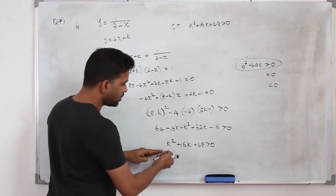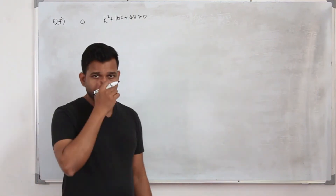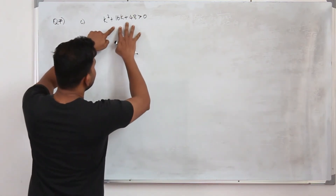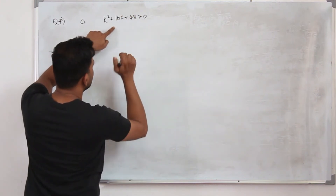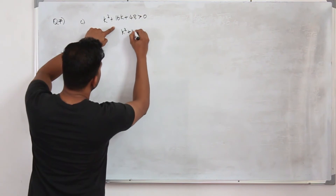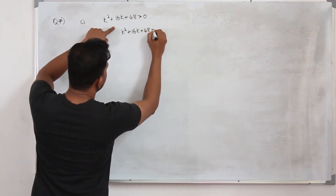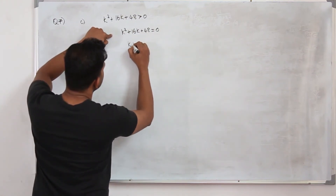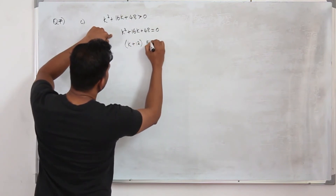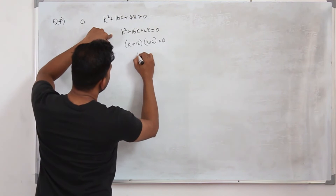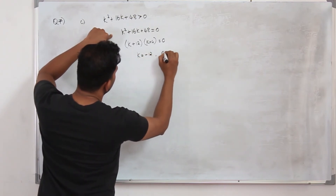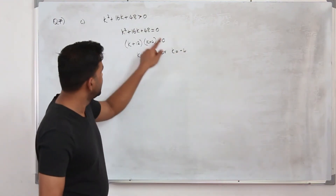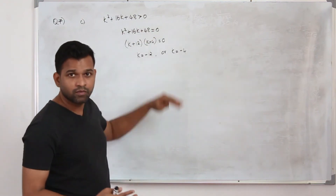For part C, we solve the quadratic inequality k squared plus 16k plus 48 > 0. First, treat it as an equation: k squared plus 16k plus 48 = 0. Factorising gives (k + 12)(k + 4) = 0, so k = minus 12 or k = minus 4. These are the two critical points.